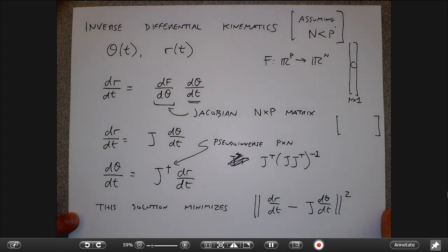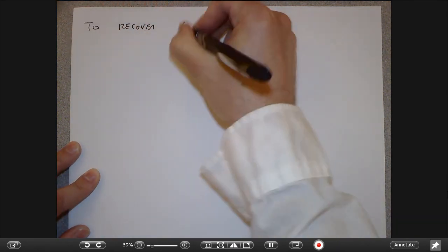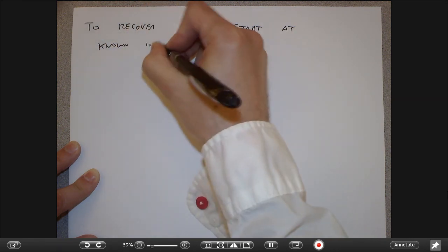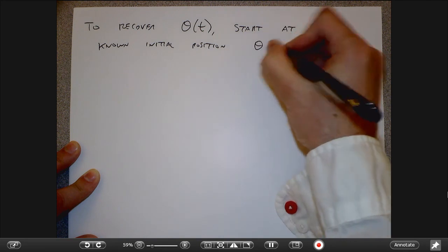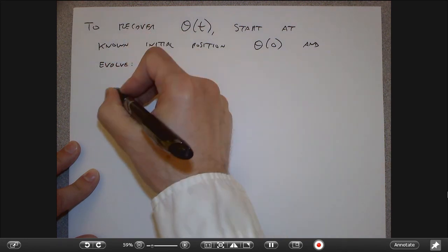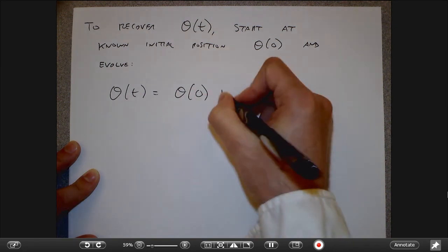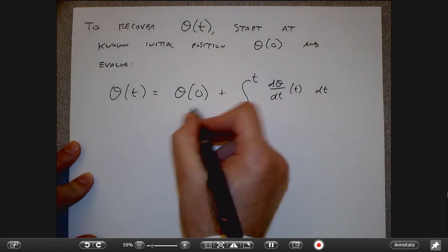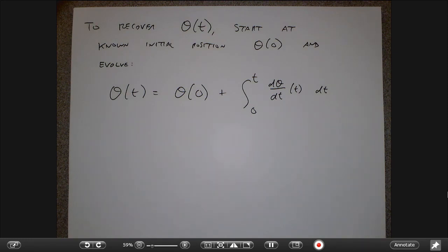To recover the actual path theta(t), I start at a known initial position theta(0) and integrate: θ(t) = θ(0) + ∫₀ᵗ (dθ/dt) dt. This is my inverse differential kinematics. If I know where the person started — for example, having them stand in a known T-pose as in the motion capture lab — then knowing the derivative lets me evolve from that initial position.